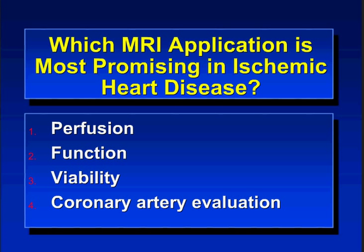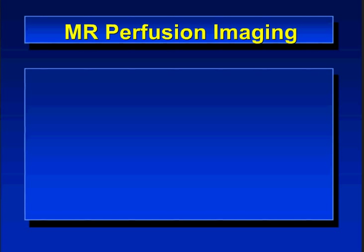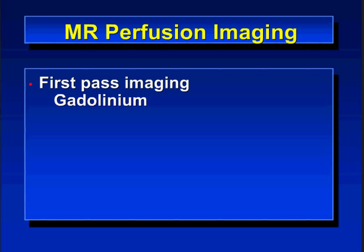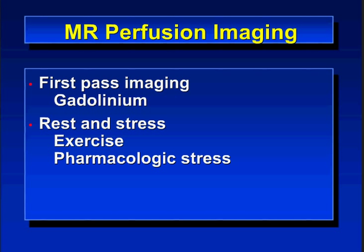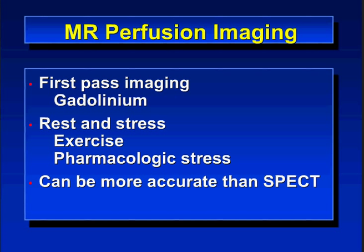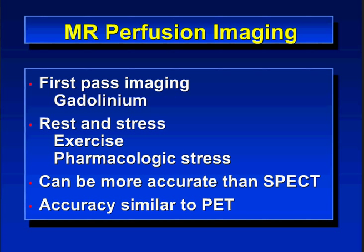Coronary artery imaging is really not that good with MR currently, especially compared to CT. Let's start with perfusion imaging. The technique involves first-pass imaging with a gadolinium chelate contrast agent, and can be done at rest and stress. Exercise stress is possible in the magnet but requires a special bicycle apparatus and is cumbersome. Most institutions use pharmacologic stress — either adenosine or dipyridamole. MR perfusion imaging can be more accurate than SPECT, with accuracy similar to PET, though it can be technically difficult to perform.